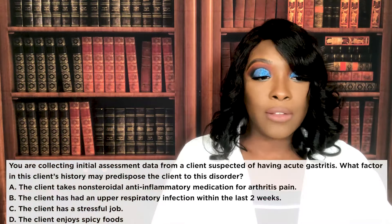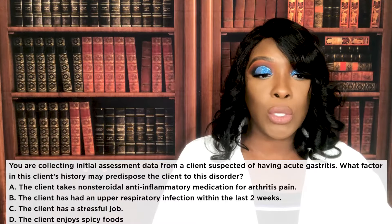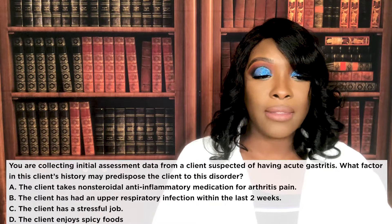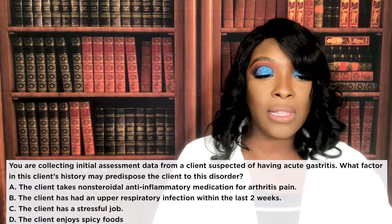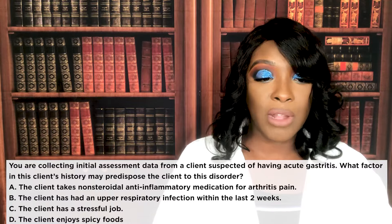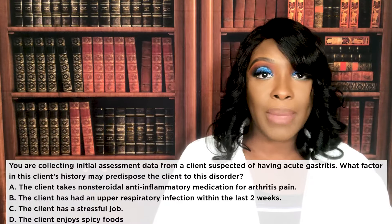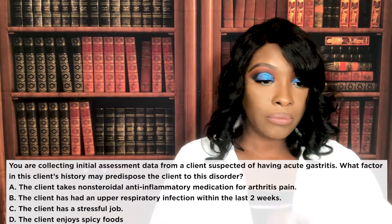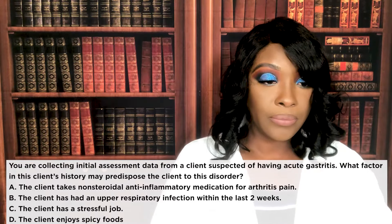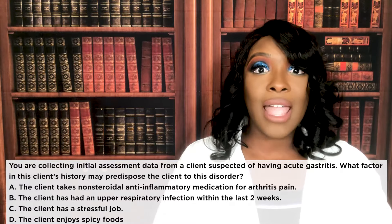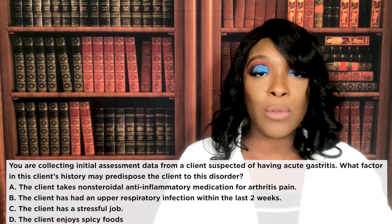First question: You're collecting initial assessment data for a client suspected of having acute gastritis. What factor in this client's history may predispose the client to this disorder? A) The client takes NSAIDs for arthritis pain. B) The client has an upper respiratory infection within the last two weeks. C) The client has a stressful job. Or D) The client enjoys spicy foods.